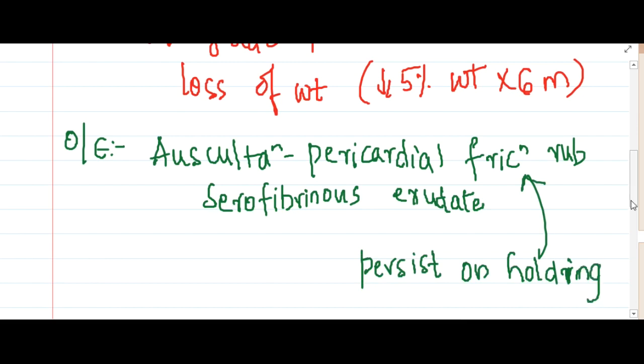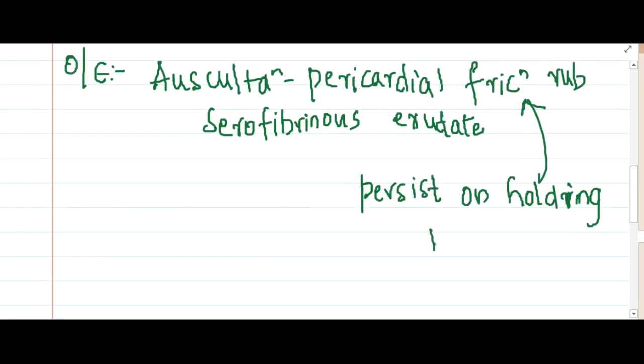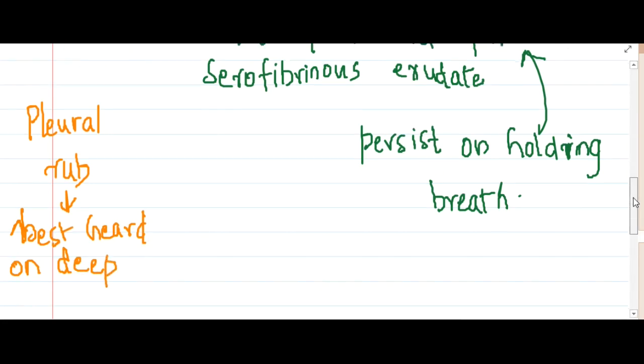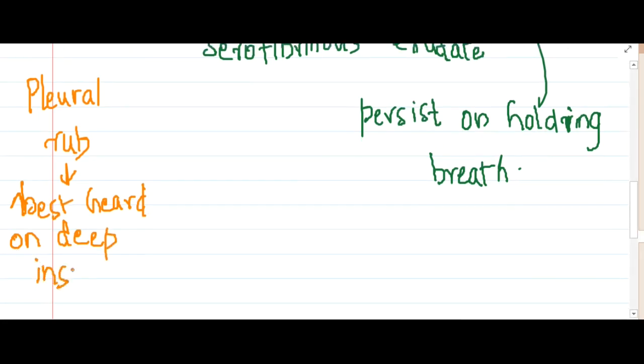Normally, the pleural rub will not persist by holding breath, but pericardial friction rub will persist. That is how you differentiate. If you see a pleural rub in pleurisy or pleural effusion, this will increase or be best heard in inspiration. This is the best method to differentiate between the pleural rub and the pericardial rub.